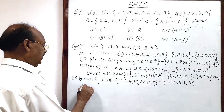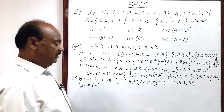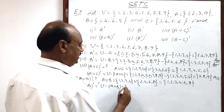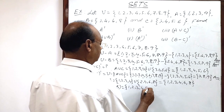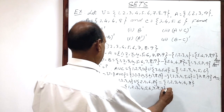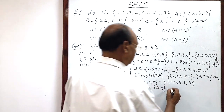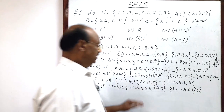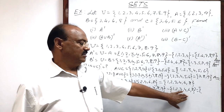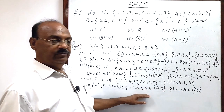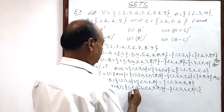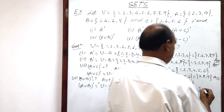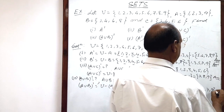Now we can find A union B whole complement very easily. This is universal set minus A union B. Universal set = {1, 2, 3, 4, 5, 6, 7, 8, 9} minus A union B = {1, 2, 3, 4, 6, 8}. These elements will be removed, so remaining elements are 5, 7, 9. This is the answer.